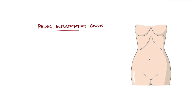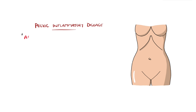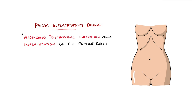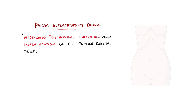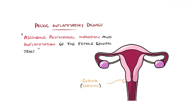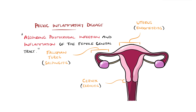Pelvic inflammatory disease refers to an ascending polymicrobial infection and inflammation of the female genital tract, which can include the cervix, uterus, fallopian tubes, ovaries, and the surrounding structures.